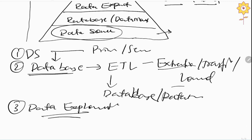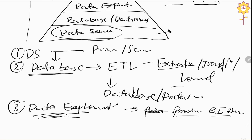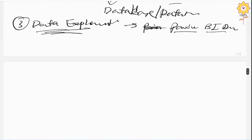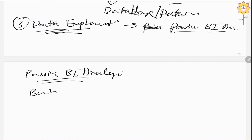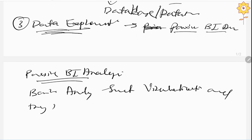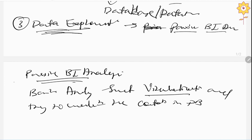Data exploration is the third component and is also known as passive BI analysis. In passive BI analysis, we apply basic analysis tools such as visualization techniques and basic statistical tools to understand what content is available in our database. This is the third stage of the BI system components.